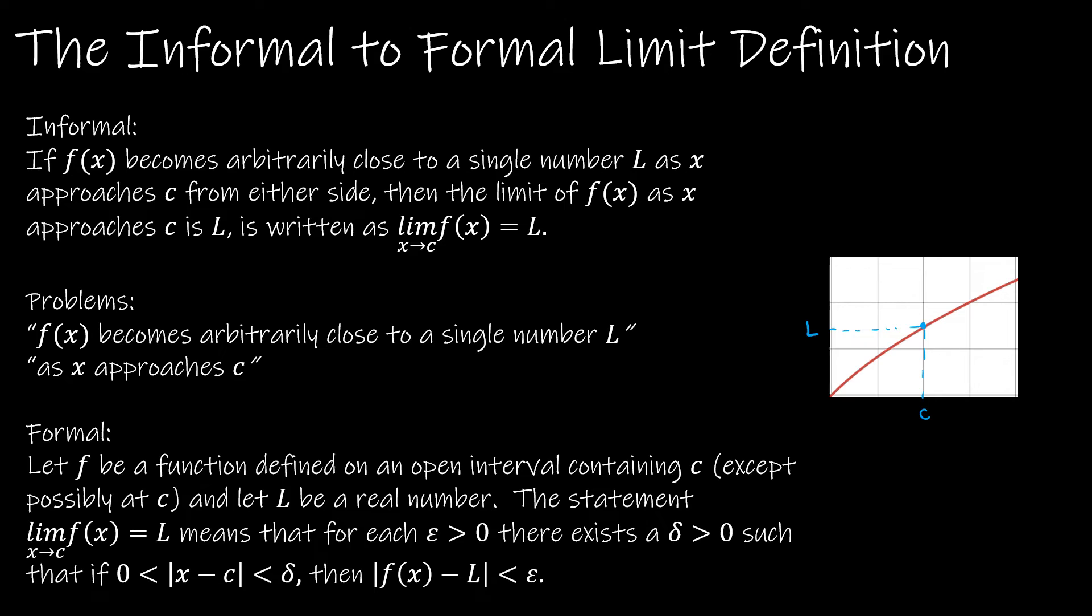Let L be some real number. So the statement, the limit as x approaches c of f(x) equals L means that for every epsilon greater than 0, there exists a delta greater than 0, such that if 0 is less than |x - c| is less than delta, then |f(x) - L| is less than epsilon. So you probably are like, okay, what does that even mean? Well, here's what that means.